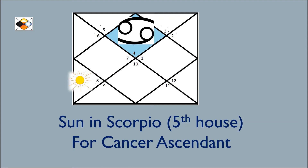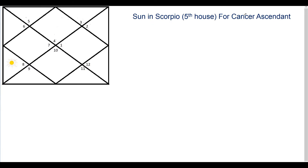Hello friends and welcome back to Picture Astrology, in the series of planets through various houses. Today we will learn about the placement of Sun in the sign of Scorpio for a Cancer ascendant horoscope. When Cancer sign, which is the fourth sign, rises in the horoscope, Scorpio falls in the fifth house of the chart. So this video is also about Sun in the fifth house for Cancer rising.